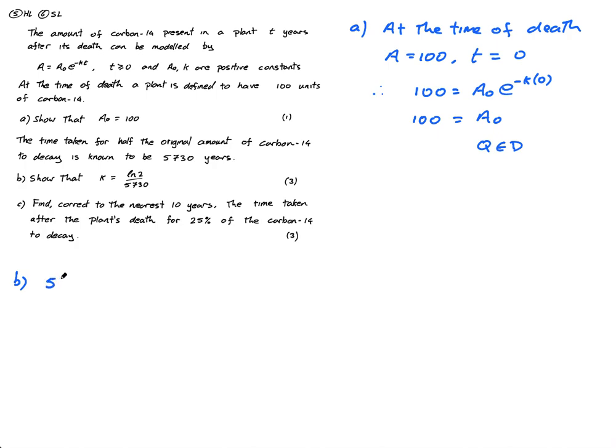So I'm going to say 50 is equal to 100, because A0 is 100, E to the negative K times this, because this is the time now, 5,730. And I need to turn this into this. Luckily, I'm really good at logs, so I will be able to do that.